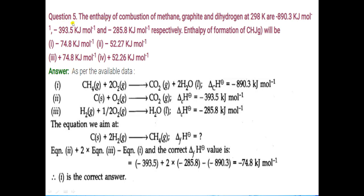Next is question number 5. The enthalpy of combustion of methane, graphite, and dihydrogen at 298 K are minus 890.3 kJ/mol, minus 393.5 kJ/mol, and minus 285.8 kJ/mol respectively. Enthalpy of formation of methane will be — you have to choose one option. For these kinds of questions, first write the equation of combustion of methane. Combustion of methane gives water and carbon dioxide. Write down the enthalpy of combustion, which is minus 890.3.